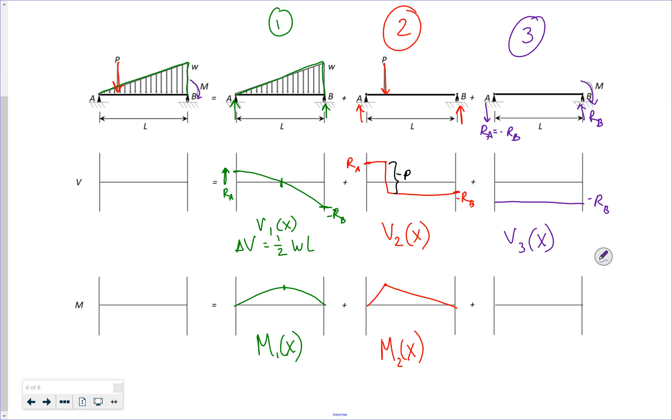A constant shear function means I have a linearly varying moment function, which is going to be zero at A because that's a pin and there can't be any moment. And over here it's going to be equal to negative M, and it's going to be a straight line between the two. It's negative because I have a negative shear force, so my slope is negative. And this is my moment function for loading three.